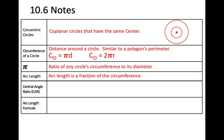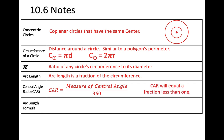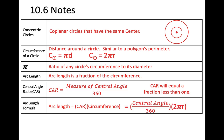An arc length is a fraction of the circumference of a circle. The central angle ratio, or CAR, equals the measure of the central angle over 360, and will always be less than 1. The formula is: arc length equals CAR times circumference, which equals (central angle / 360) times 2πr.